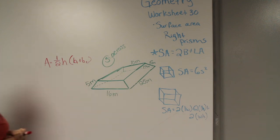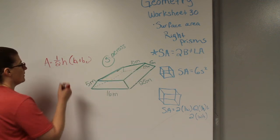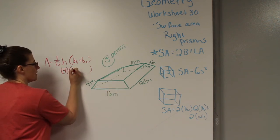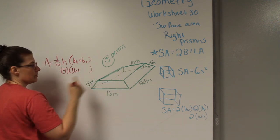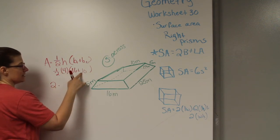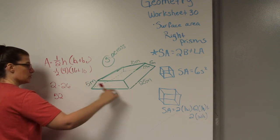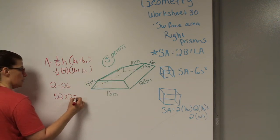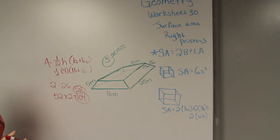The trapezoid dimensions are: height equals four meters, base one equals 16, and base two equals 10. Plugging into the formula: one-half of four is two, and 16 plus 10 is 26, so two times 26 equals 52 square meters for one trapezoid. Since there are two bases, multiply by two to get 104. That is the 2B portion of the formula.